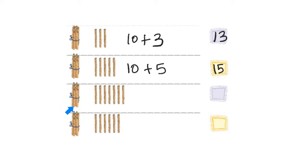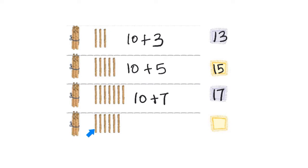Now in the next picture, I see one bundle of ten sticks and one, two, three, four, five, six, and seven, which gives me ten plus seven sticks, which is seventeen sticks. In the next picture, I see one bundle of ten sticks and eleven, twelve, thirteen, fourteen, fifteen, and sixteen — therefore ten plus six gives me the number sixteen.